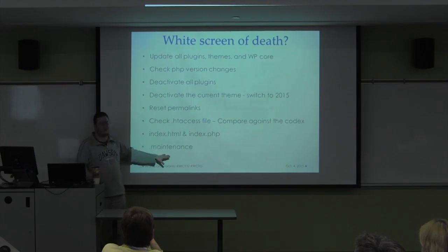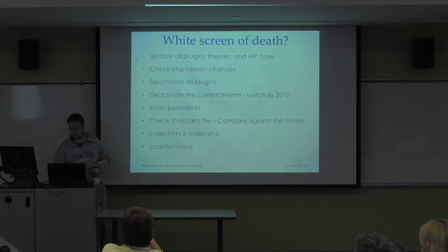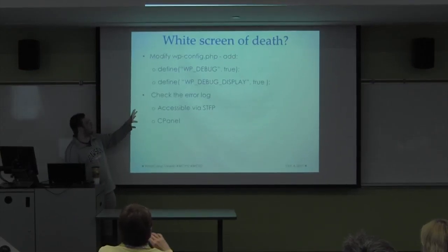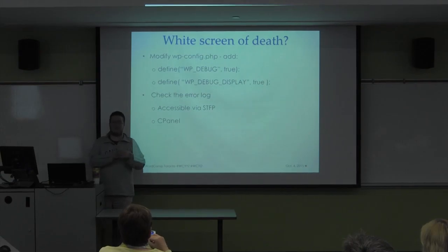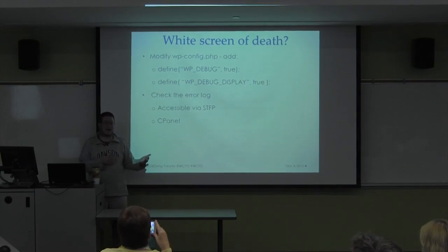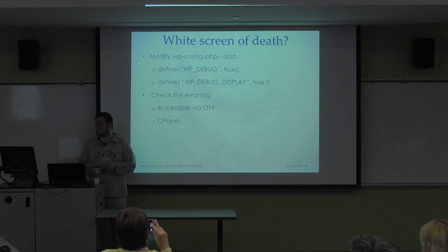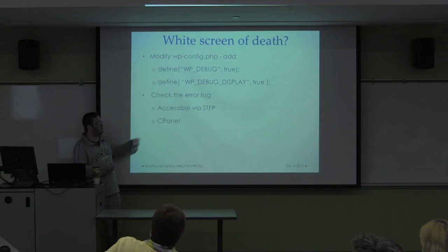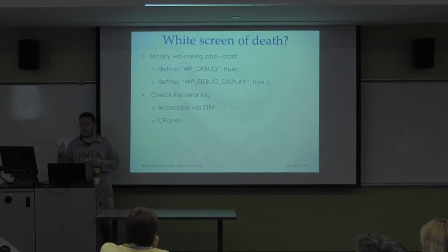Occasionally there may be a maintenance file in the root — delete it if you need to as a last resort. If you still haven't resolved problems, modify wp-config.php and add debug lines to see errors on screen. You can also check the error log via SFTP or through cPanel — the errors there will give you specific issues you can Google for solutions.